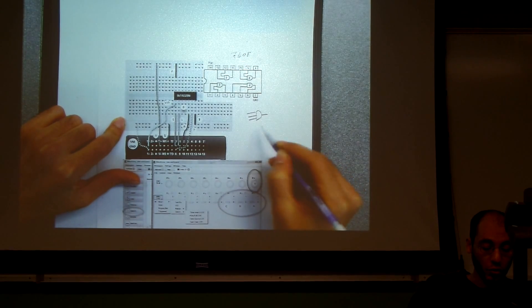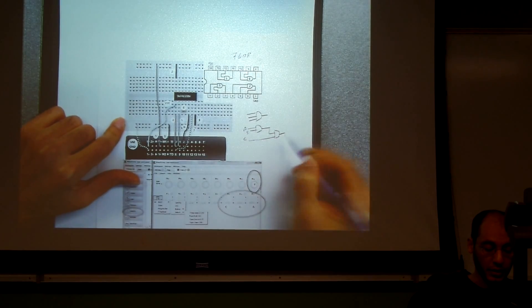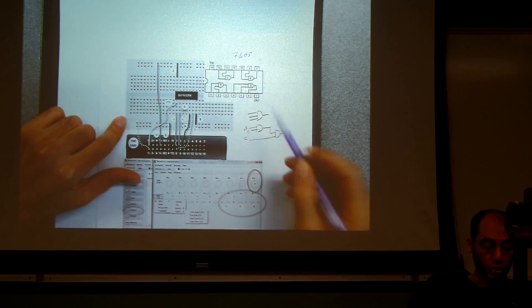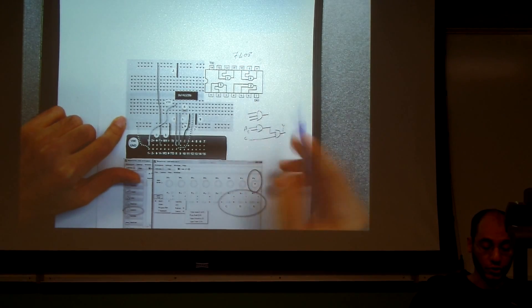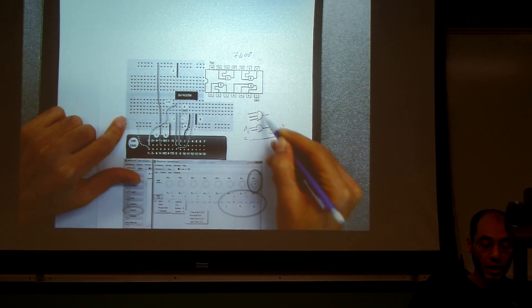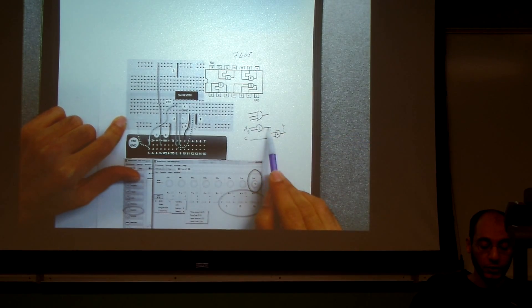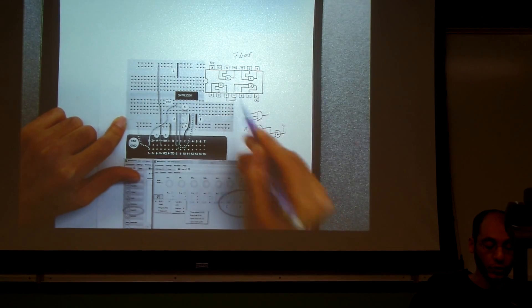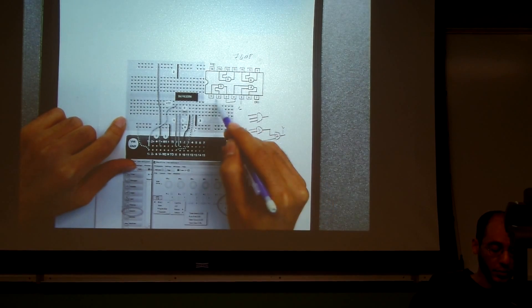To build a three-input AND gate from two-input AND gates, you use two AND gates: the first one and a second one. Take pin number three and connect it to pin number four — connecting the output of the first AND gate to one input of the second. Then connect pin number five to C, pin number two to B, and pin number one to A.